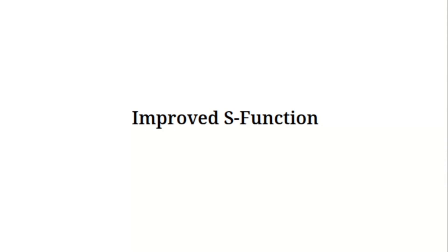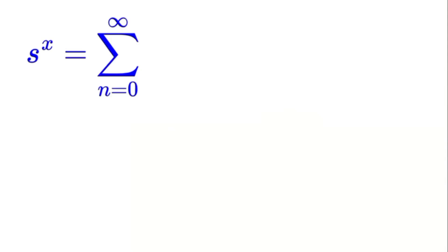Let's start with the definition. The improved S-function, which we'll call S to the power of X, is defined by an infinite series. We take the sum from n equals 0 to infinity of X to the power of n divided by n double factorial.